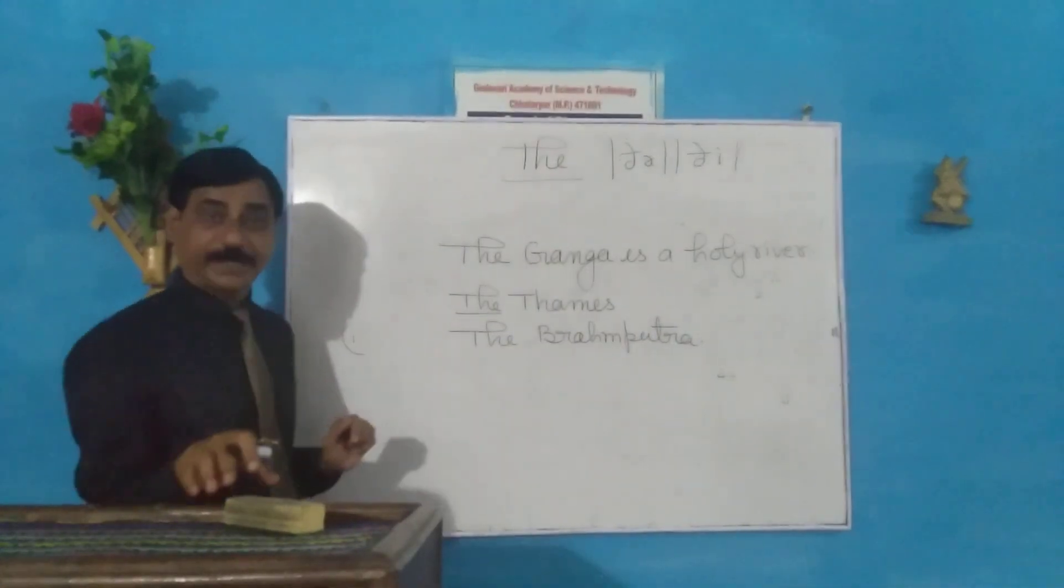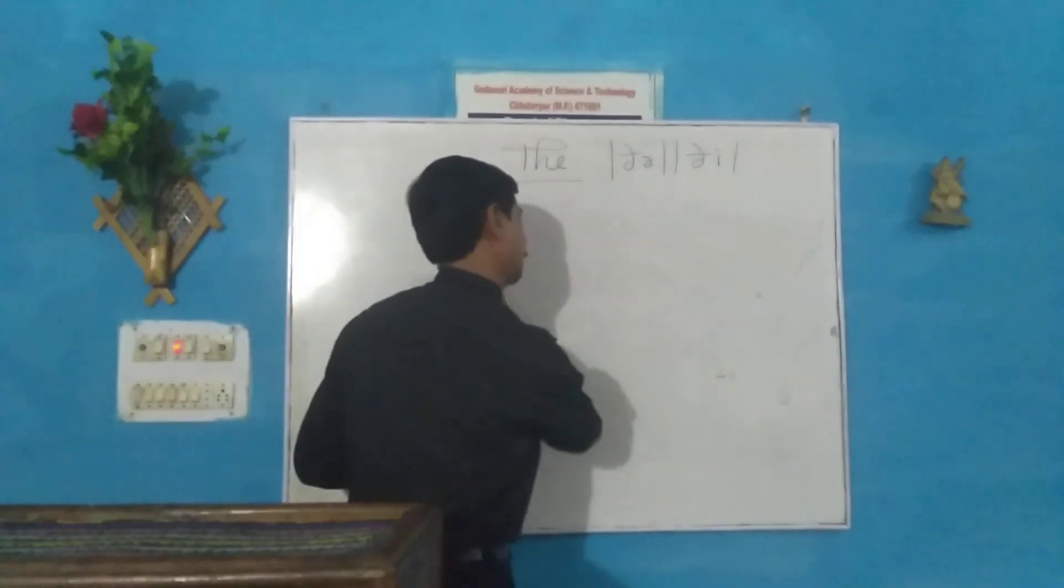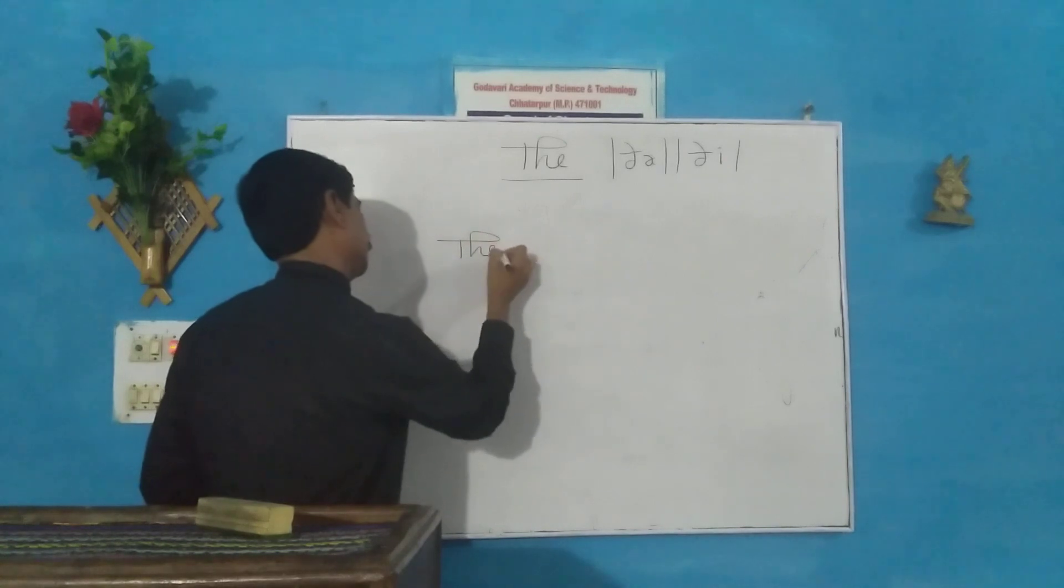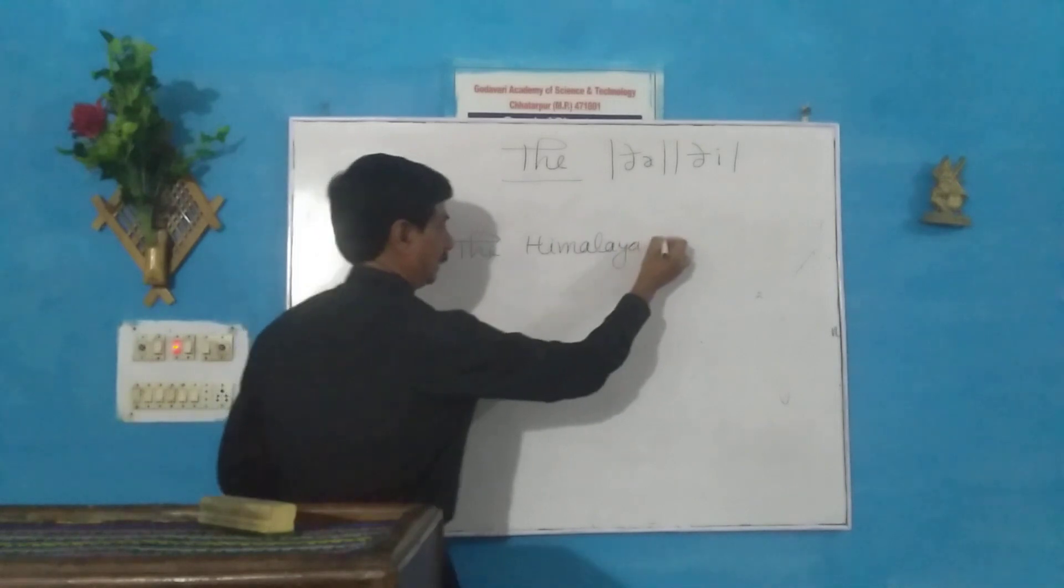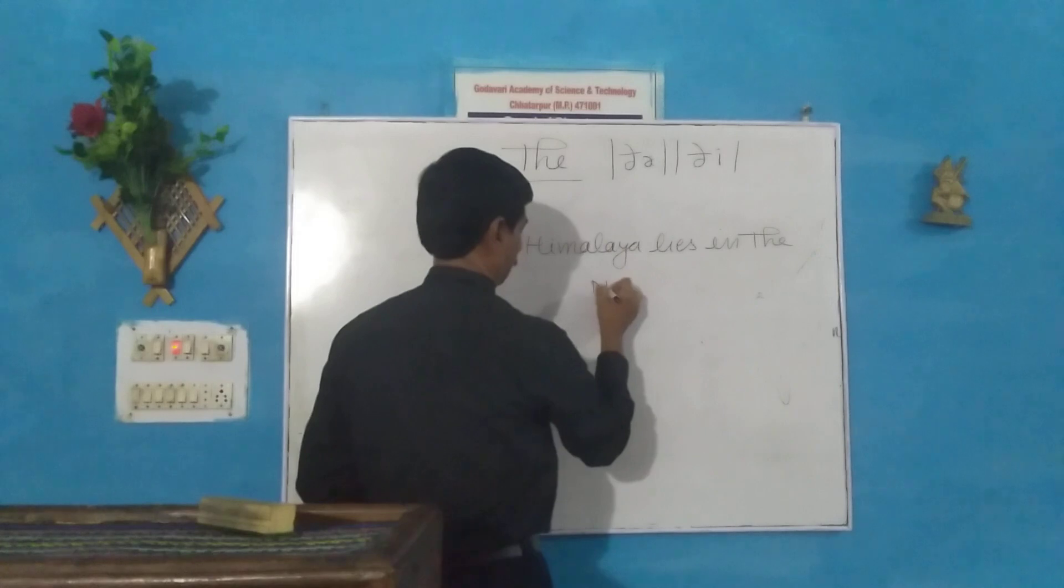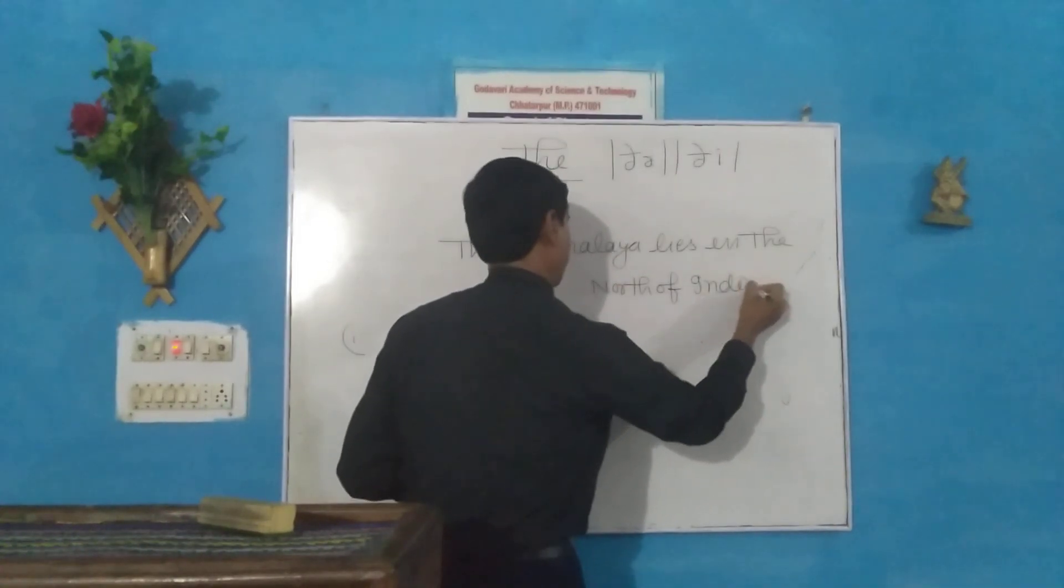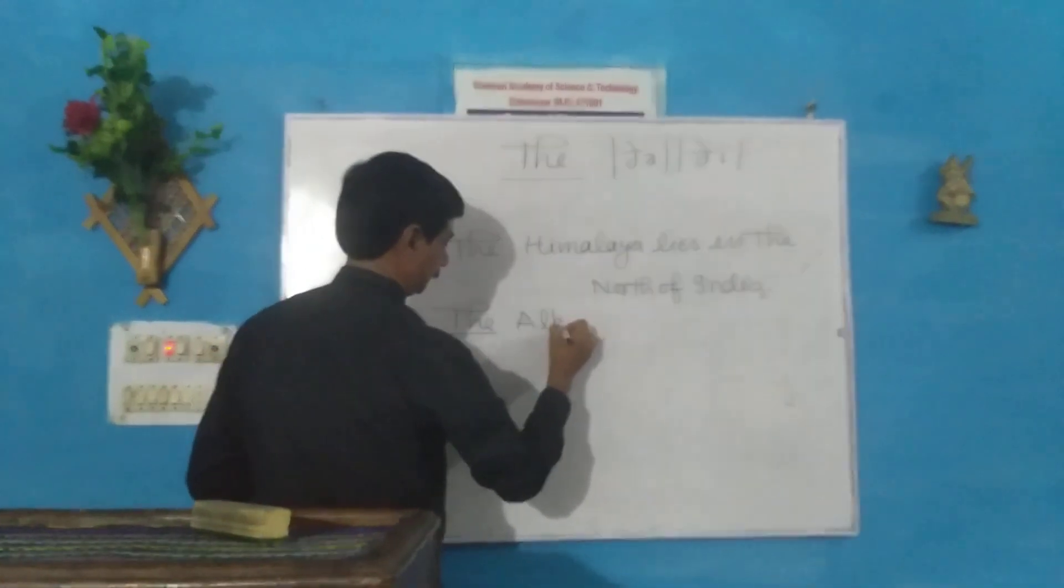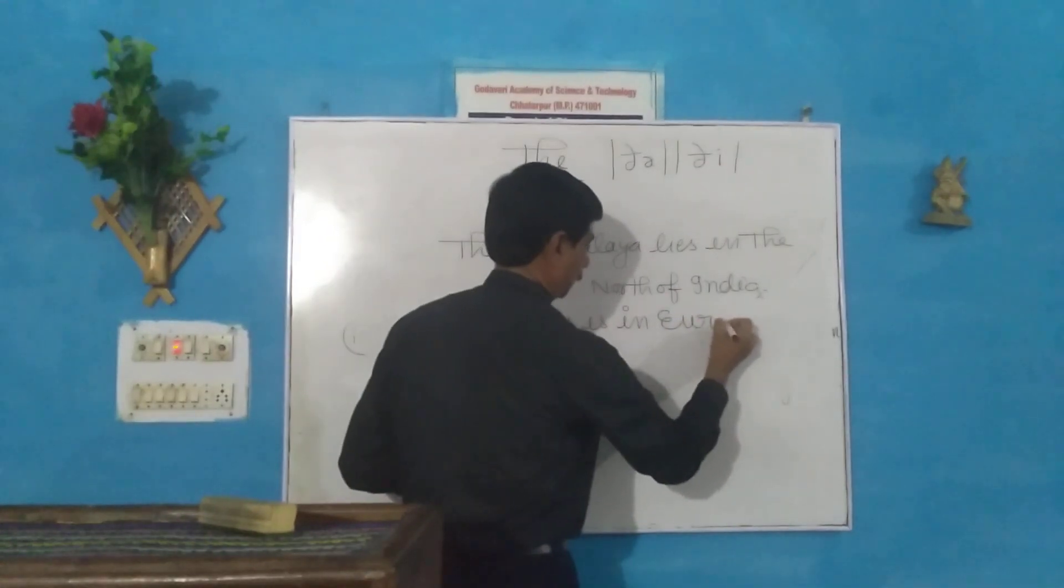The is used before famous mountains. Before the names of mountains and mountain ranges, we use the. The Himalaya. The Himalaya lies in the north of India. The Alps is in Europe.